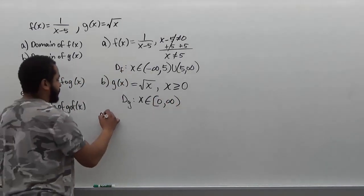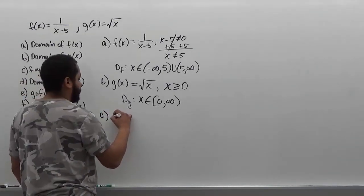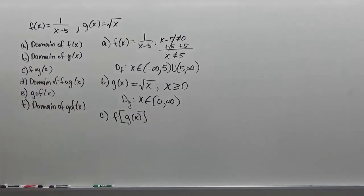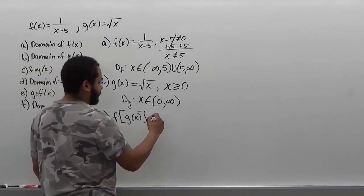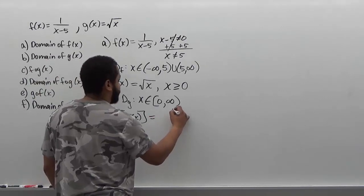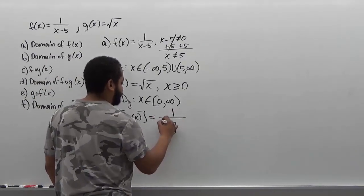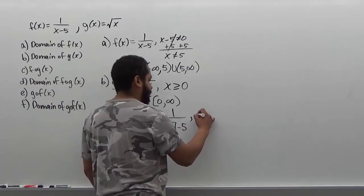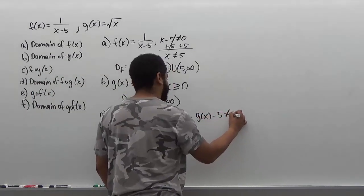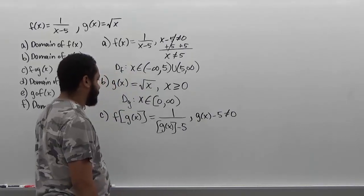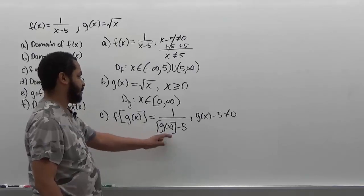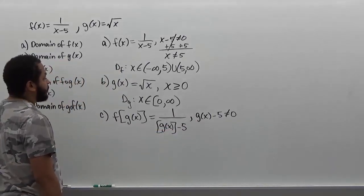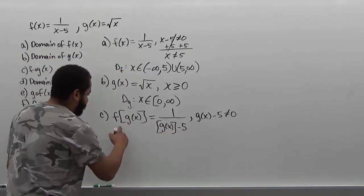Now let's put our first composition function together — f of g of x — in which we have the function of g as an input into f. What we're doing here is swapping whatever the g function is as the input for this system. So we have basically 1 over g of x, take away 5. For this function to work, g of x minus 5 cannot be equivalent to 0. I'm going to leave this as a stencil while I work out the actual problem using the input of the system.